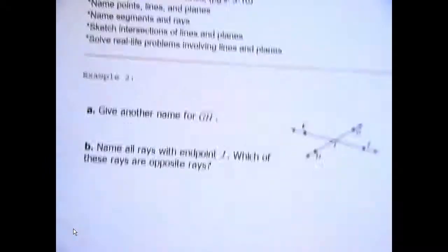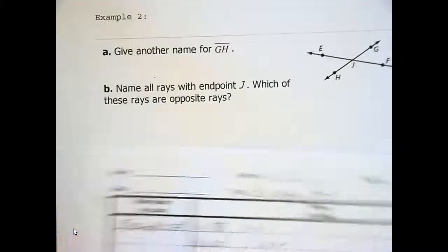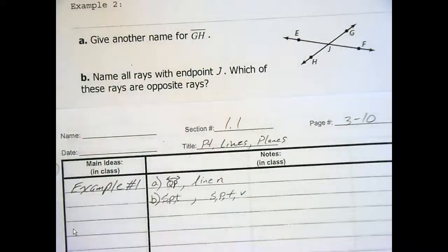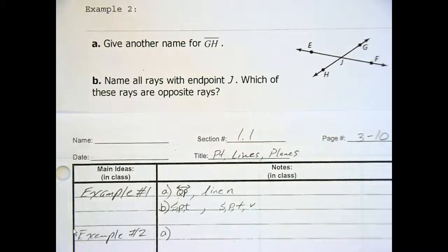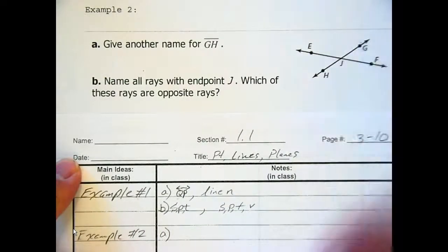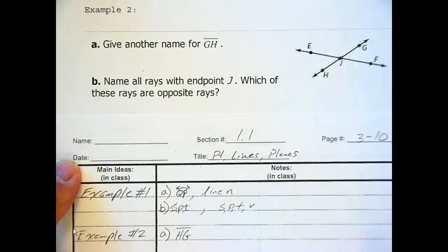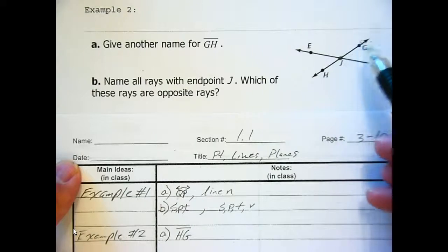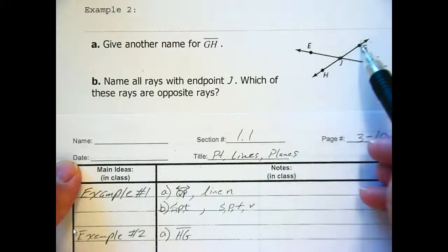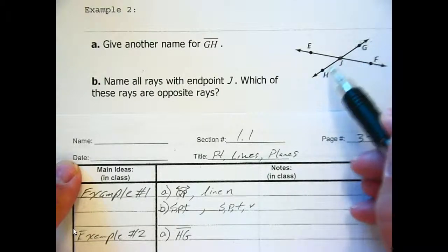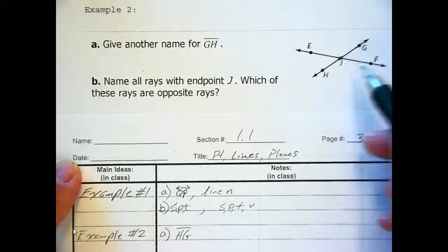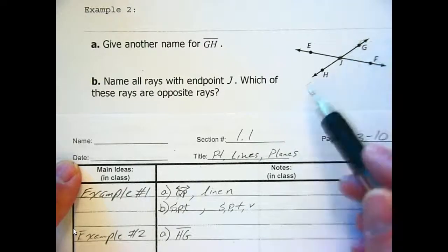Take a look at example two. Give another name for GH, and name all the rays with endpoint J, and which of these rays are opposite rays. Another name for GH — we could also call it HG, segment HG. Could we call it GJ? Well, J only goes to there — that's cutting off a little piece, so you can't call it GJ. If we're dealing with a line you could, but a segment is a piece of a line.